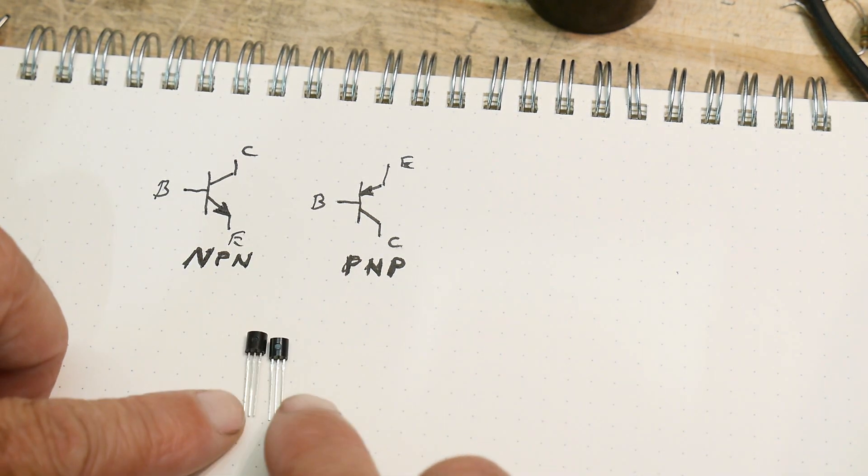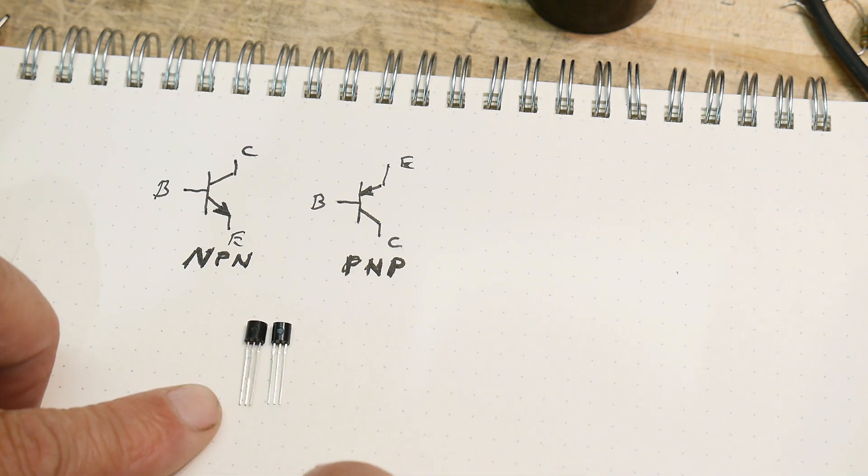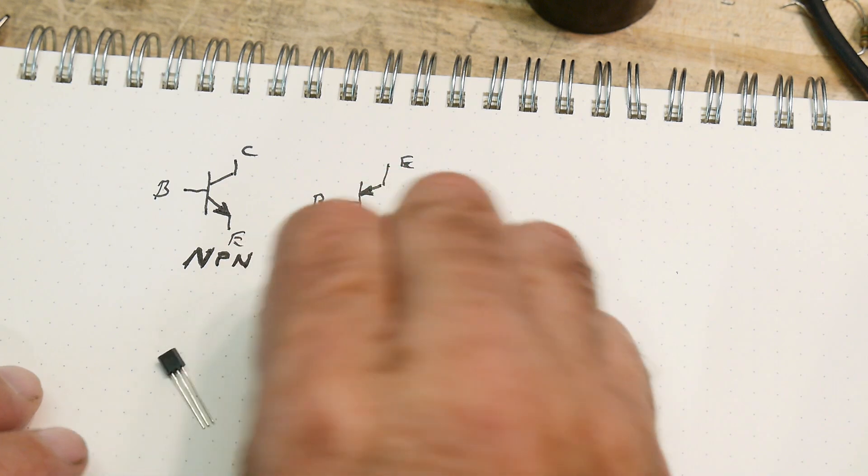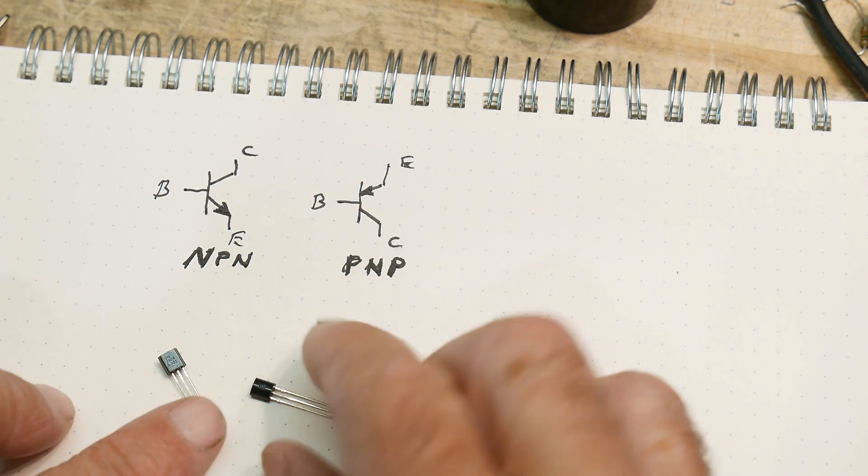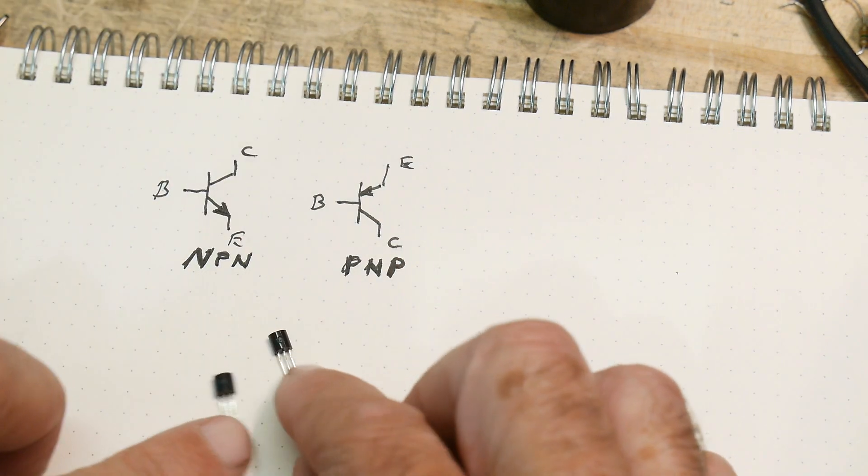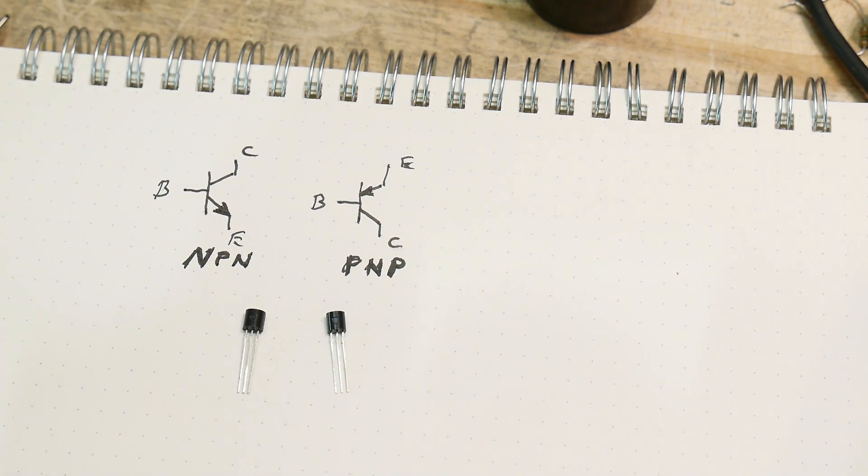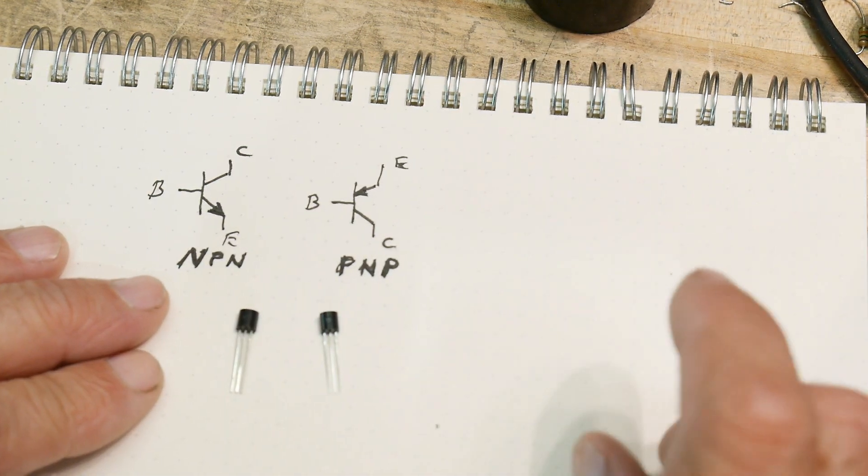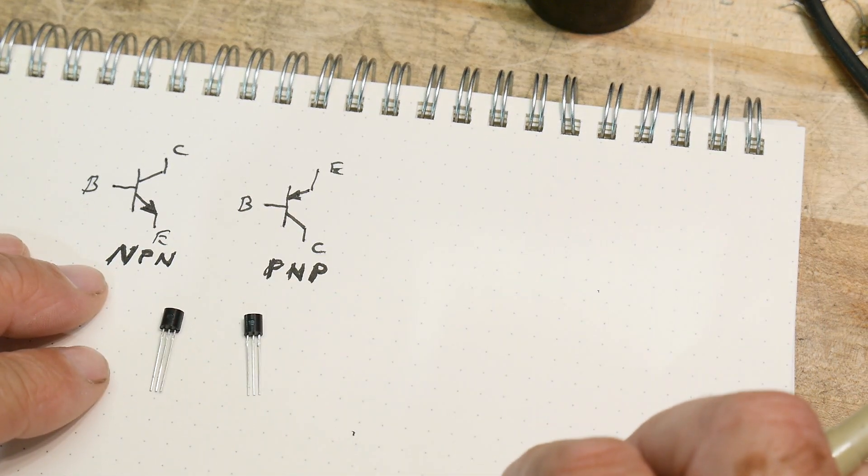Then we could go to the internet and we can get a data sheet for the part number, if we can find it. Maybe we don't know. Maybe not all the numbers are in there. Maybe it's a weird three-digit code.